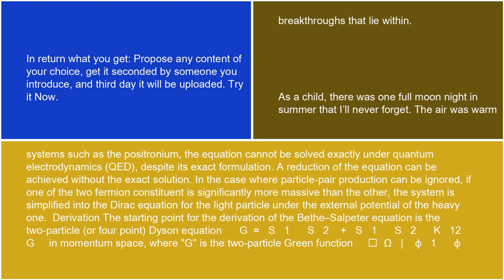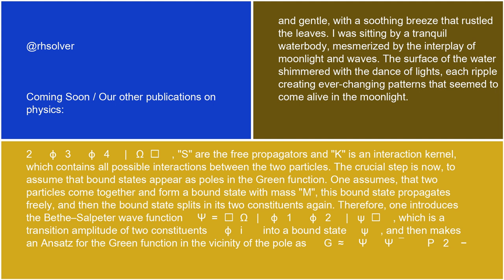Derivation: the starting point for the derivation of the Bethe-Salpeter equation is the two-particle, or four-point, Dyson equation: G = S₁S₂ + S₁S₂K₁₂G in momentum space, where G is the two-particle Green function ⟨Ω|φ₁φ₂φ₃φ₄|Ω⟩, S are the free propagators, and K is an interaction kernel which contains all possible interactions between the two particles.